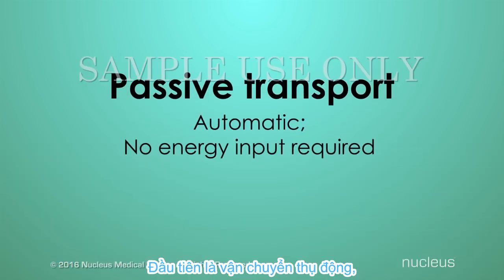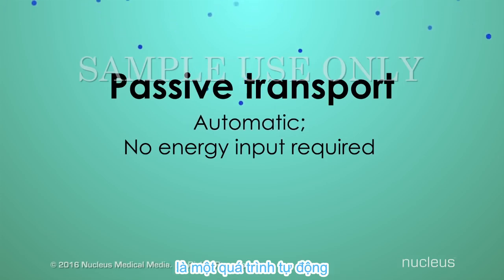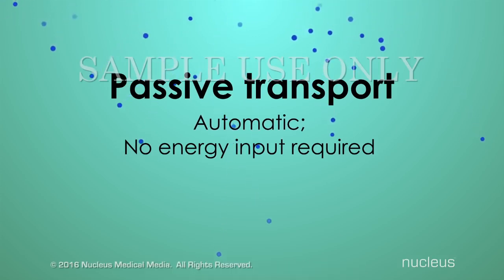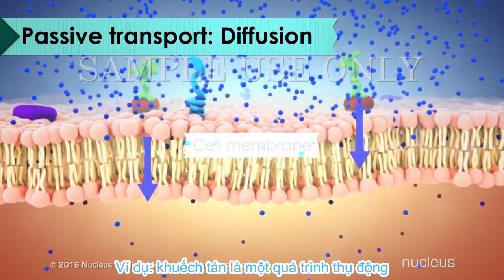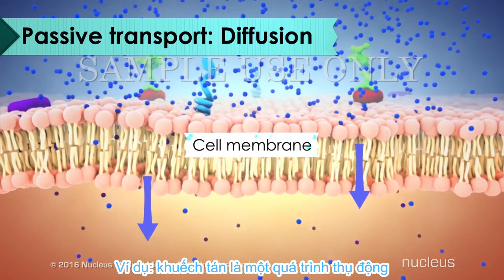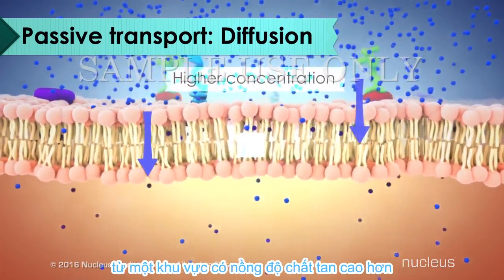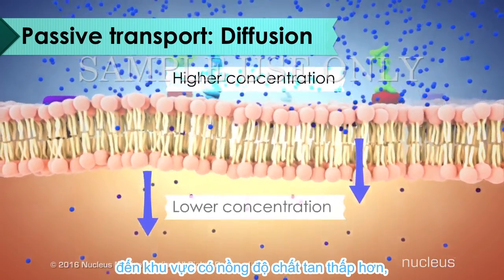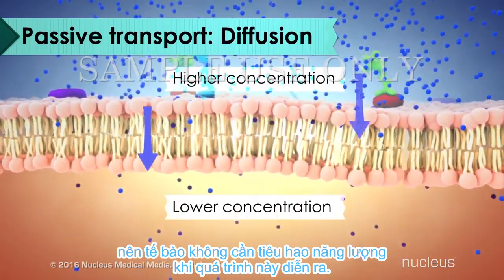The first category is passive transport. For a cell, passive transport means it's an automatic process that doesn't require any input of energy. For example, diffusion is a passive process in which particles move either into or out of the cell from an area of higher concentration to an area of lower concentration. The cell doesn't use any energy when this happens.